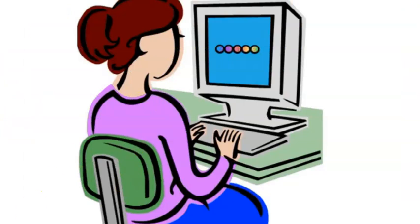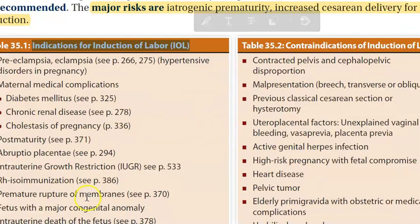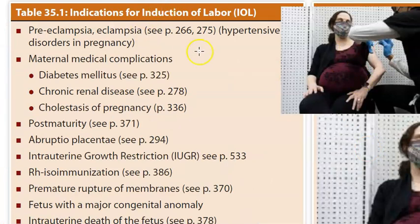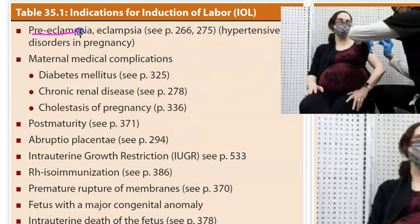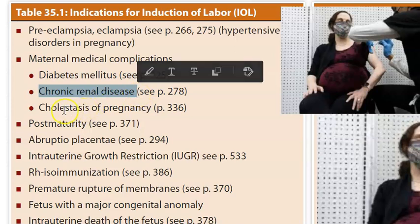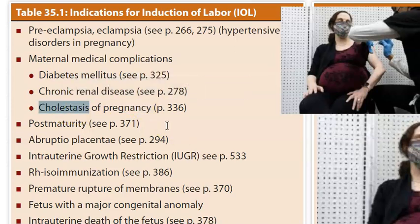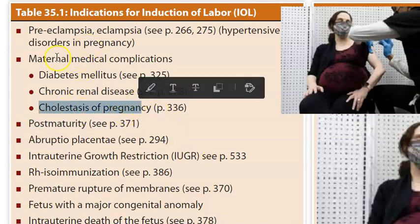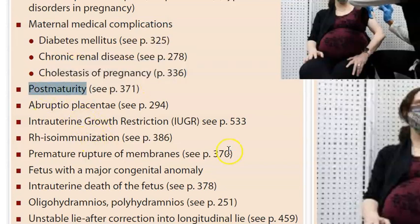Let us look at the indications for induction of labor (IOL). If a person has preeclampsia or eclampsia — hypertension progressing to seizures — and medications like labetalol, magnesium sulfate, and nifedipine have failed, you will want to induce labor. Maternal medical complications such as diabetes mellitus, renal disease, and cholestasis of pregnancy (elevated bile levels) are also indications. Post-maturity, when delivery has not occurred after the estimated delivery date, is another indication.